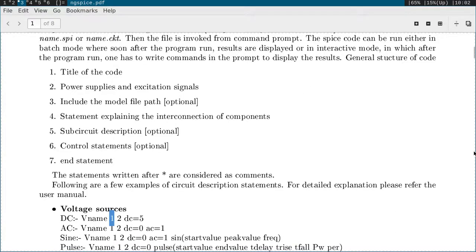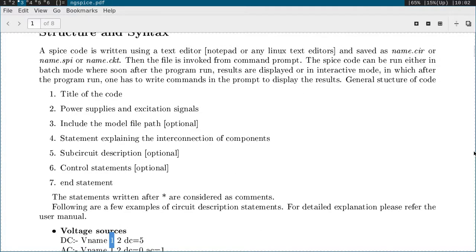For example, if you take any circuit it will have these components. First one you can write title of the code, then you mention all the power supplies or excitation signal which you are going to use, and include the model file path. Suppose if you are using a particular BJT or a particular diode you can add its parameters through a model file.